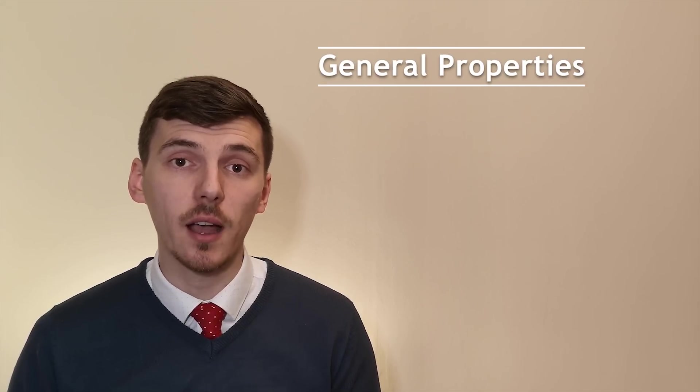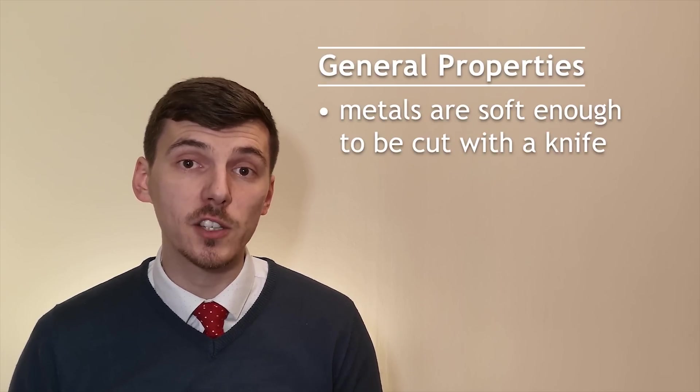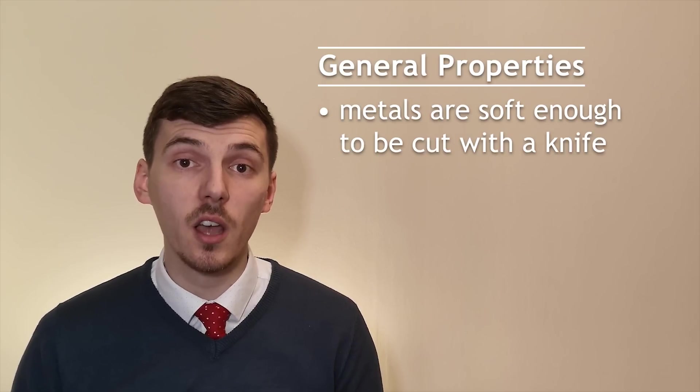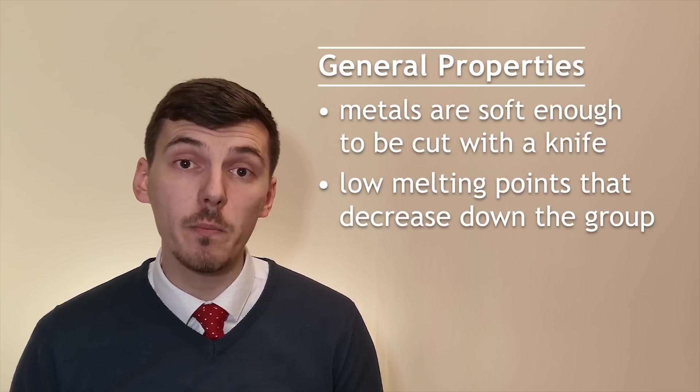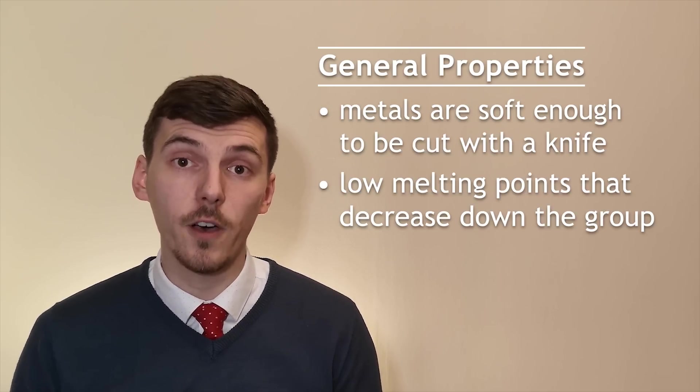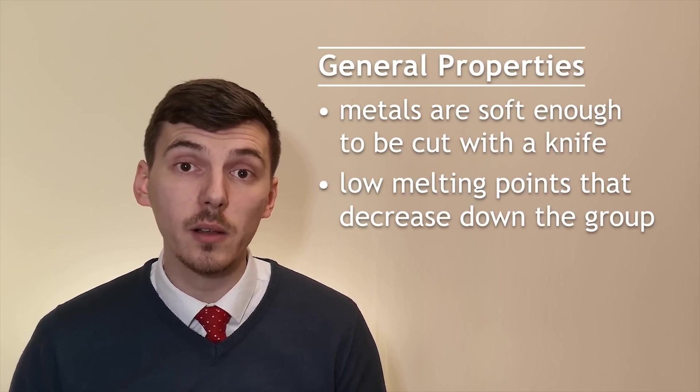Some general properties of the alkali metals are that they're very soft and can be cut easily with a knife. The further down the group the softer they are. You should know that they also have very low melting points and again the further down the group the lower the melting point.